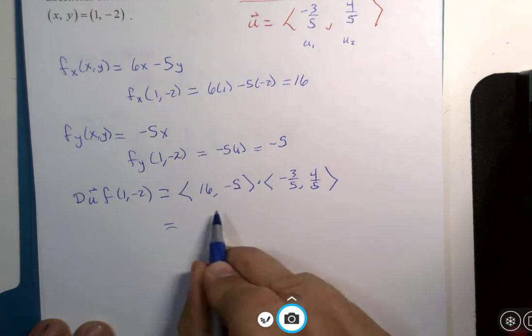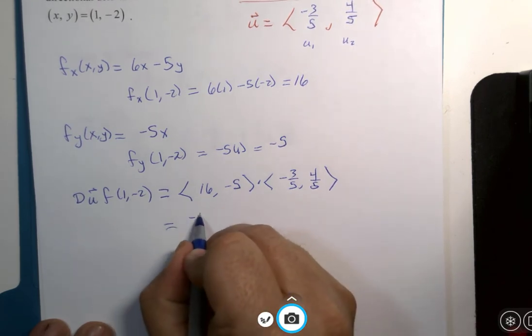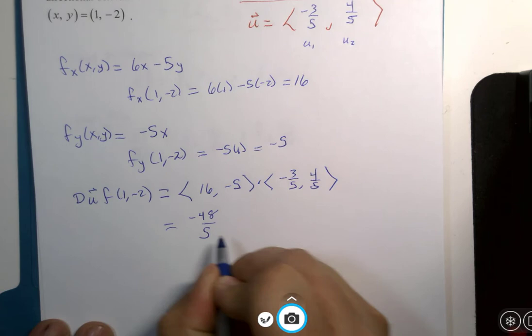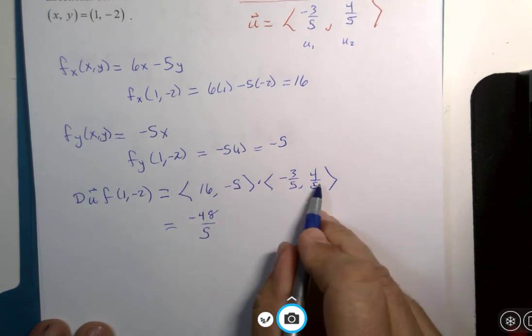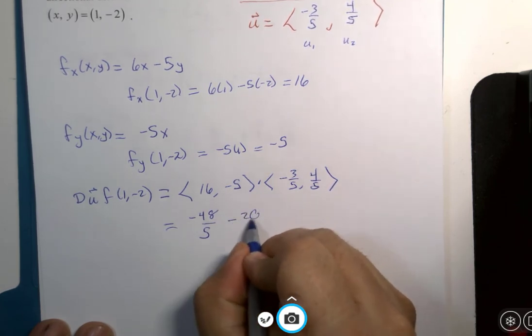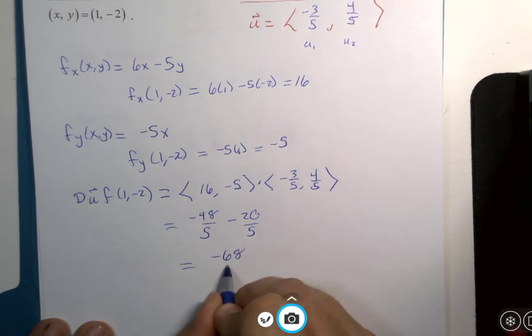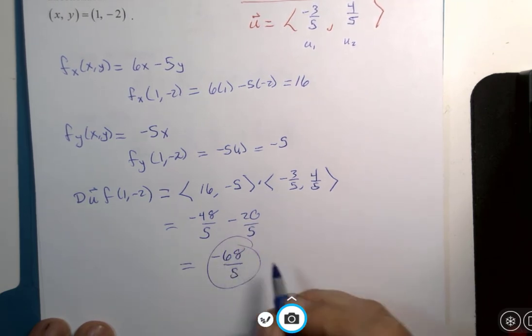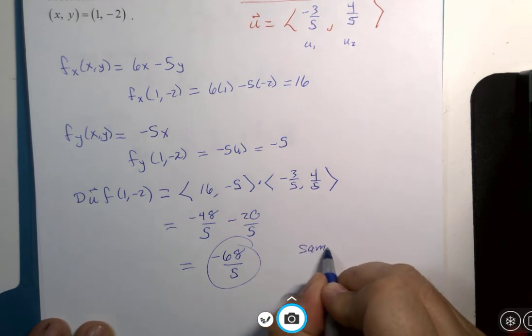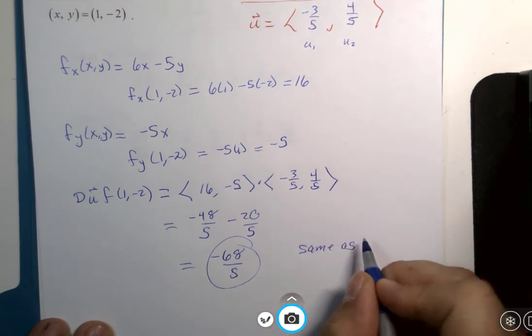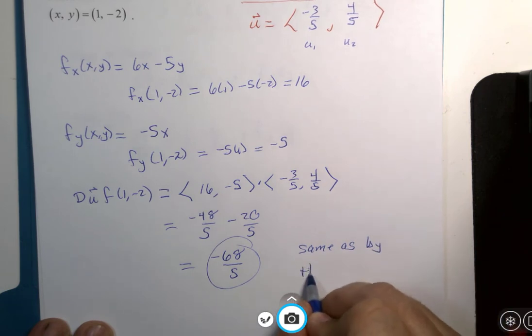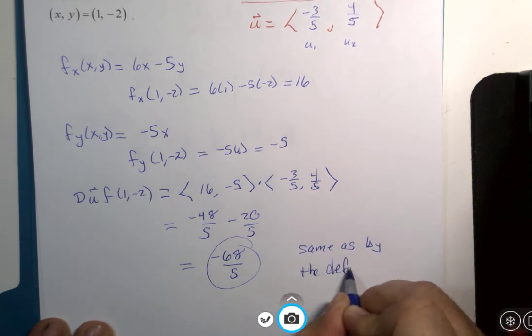Let's see. 16 multiplied by negative 3 fifths is negative 48 fifths. Minus 5 times 4 fifths is negative 20 fifths. And this is equal to negative 68 over 5, which is the same as by the definition.